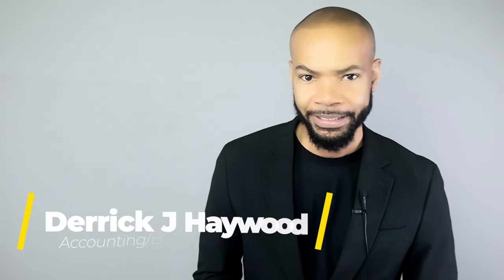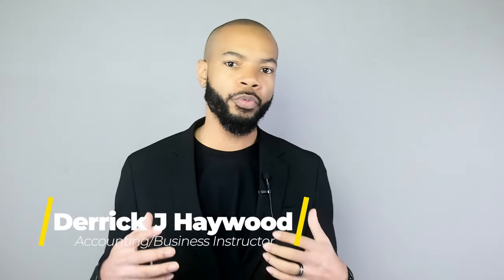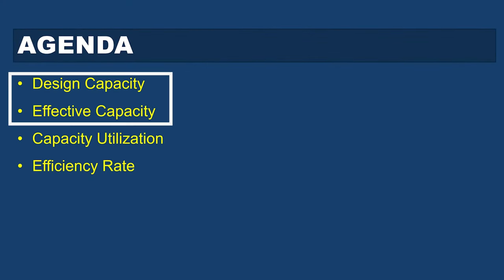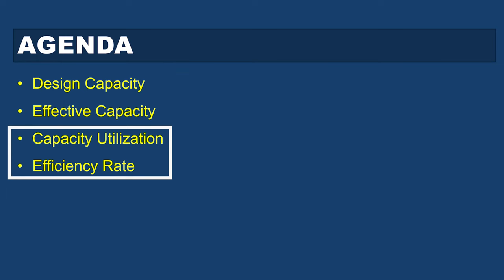When we look at capacity, how do we know how well we are utilizing the capacity that we have? And in utilizing that capacity, how efficient are we in using the amount that we're using? In this video I will talk about design and effective capacity, as well as some capacity metrics: capacity utilization and efficiency rate. First let's define a few things.